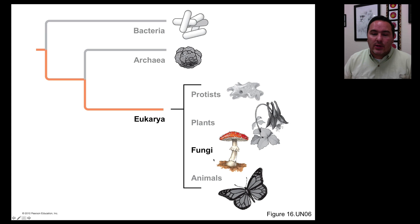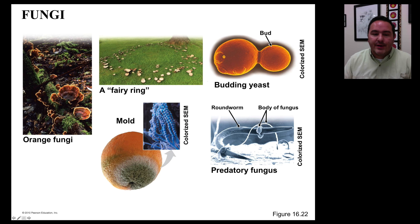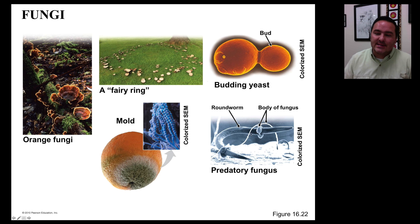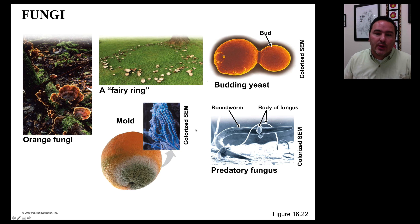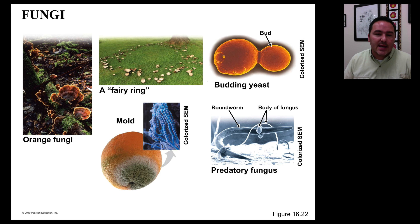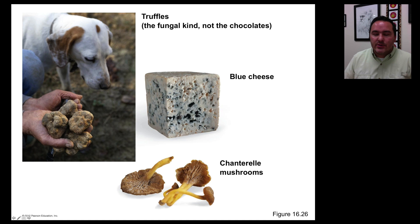The next group we're going to look at are the fungi, which are also very diverse. Some look like mushrooms, others are mold. There's even predatory fungi, like this one that surrounds a roundworm, holds it until it dies, and then feeds off the decaying tissue. Yeast are also a form of fungi. Fungi are actually more closely related to animals than to plants, even though for many years they were classified the other way. Some fungi are also used in our foods, like blue cheese, mushrooms, and even truffles.